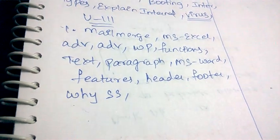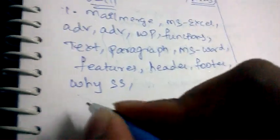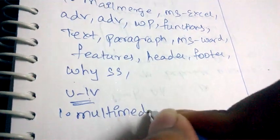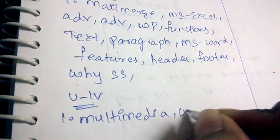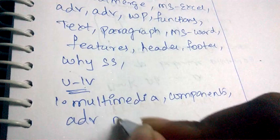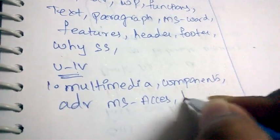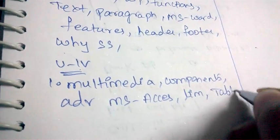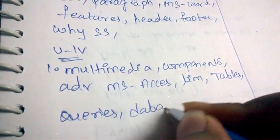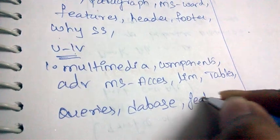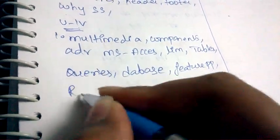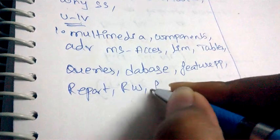Header and footer in MS Word are very important questions in Unit 3. Coming to Unit 4: what is multimedia, what are the components of multimedia, what are the advantages of MS Access, what are the limitations of MS Access, what are tables, what are queries, what are databases, what are the features of PowerPoint presentation, what are reports, what is report writing, and what are forms.